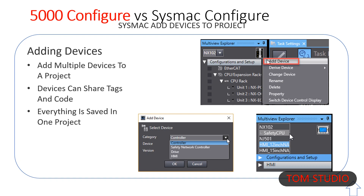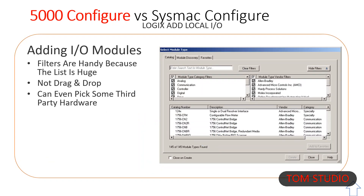Hardware can be filtered by category and vendor. The default is the latest firmware. Drag and drop to move slot location if available. Module setup is accessed in the tree, and modules can be discovered or scanned when online.